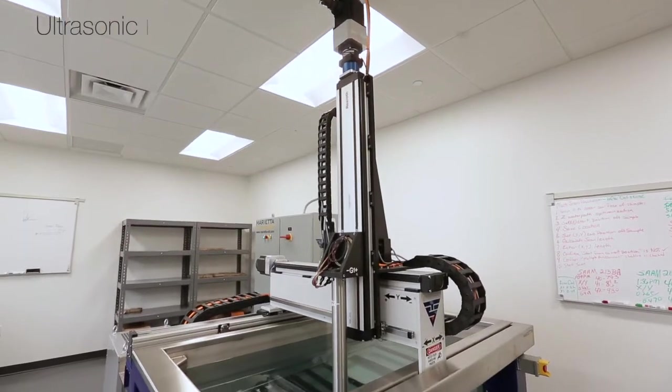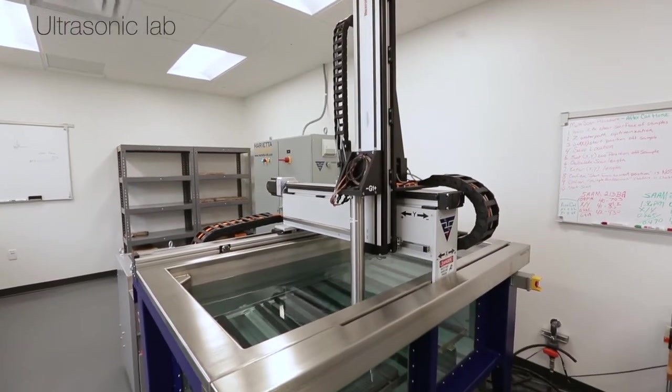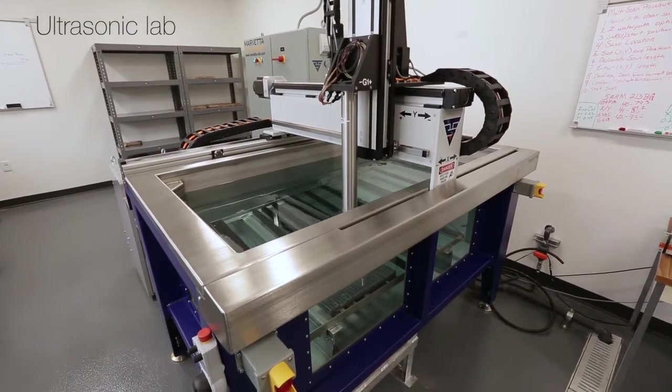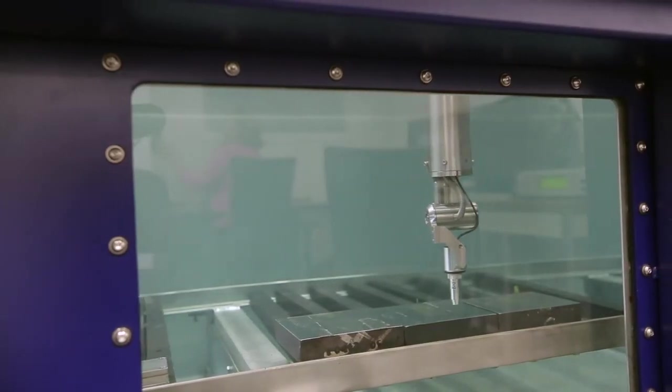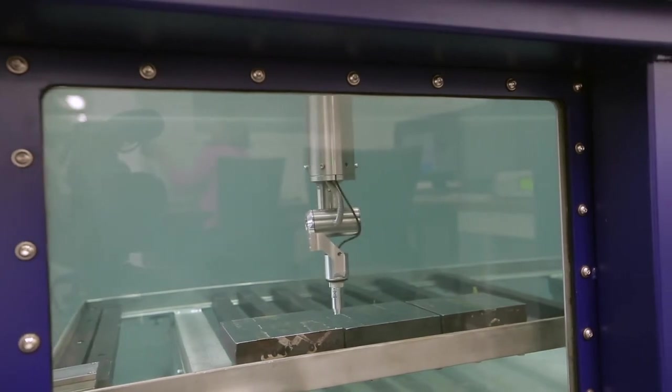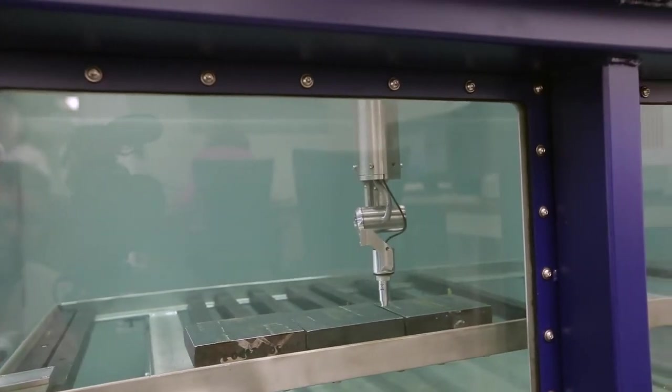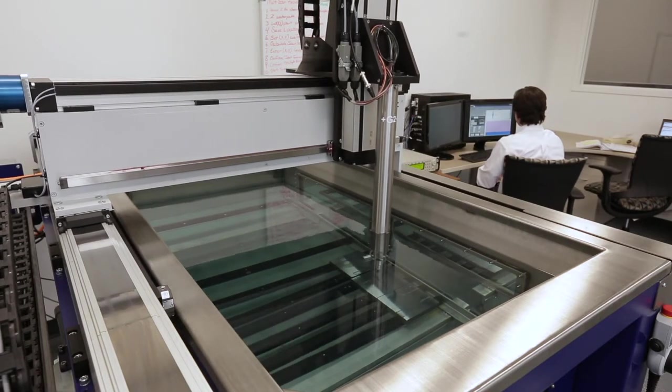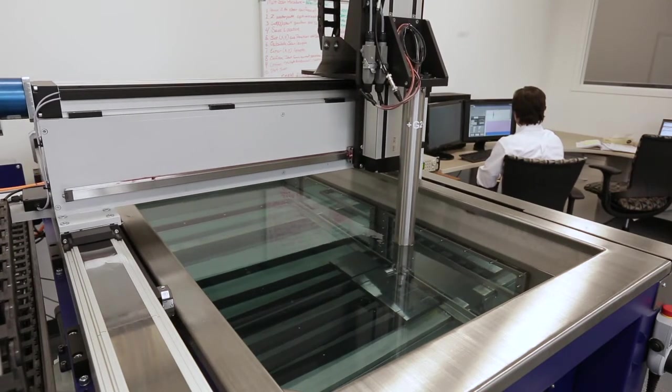Last one is our ultrasonic lab which is primarily designed to evaluate the macro inclusion population. We use an ultrasonic wave that penetrates into the steel and if there's a large inclusion present, a portion of that wave is reflected back to the sensor and we can create a map of the inclusions in the steel.